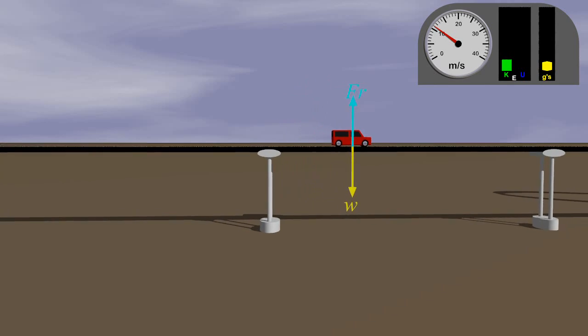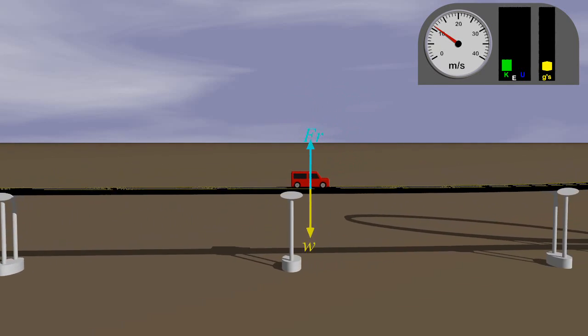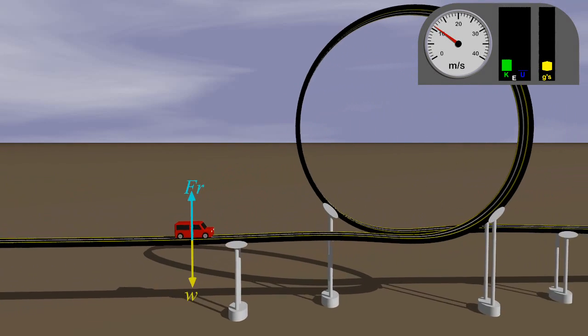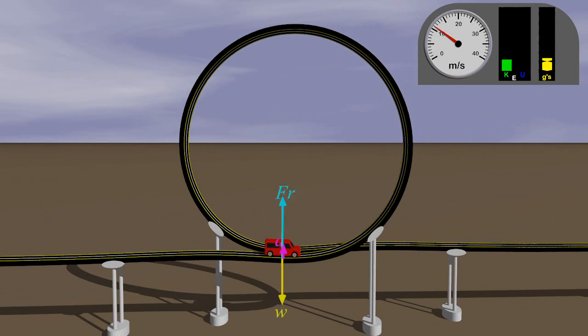The car's acceleration results from the combination of the car's weight plus the contact and friction forces of the track on the tires. Because the car is going at a constant speed, the acceleration only arises in forms of changes in the direction of motion.